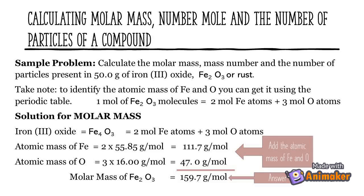Solution for molar mass: atomic mass of iron = 2 × 55.85 g/mol = 111.7 g/mol. Atomic mass of oxygen = 3 × 16.00 g/mol = 48.00 g/mol. So the molar mass of iron(III) oxide is equal to 159.7 grams per mole.